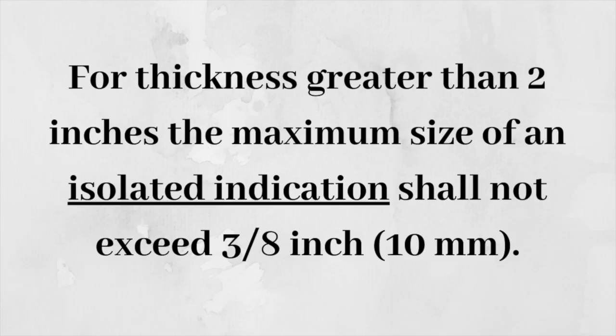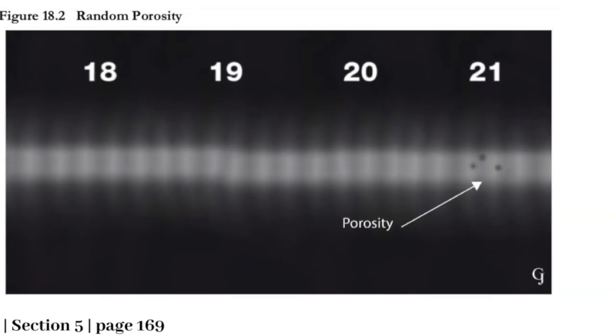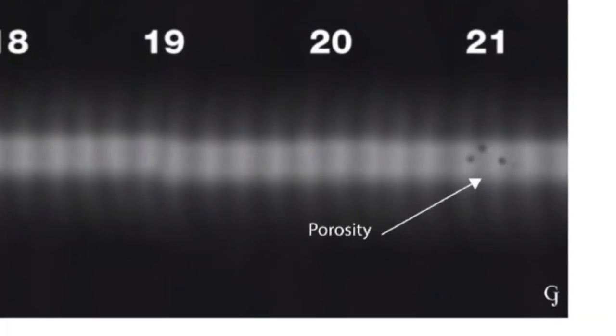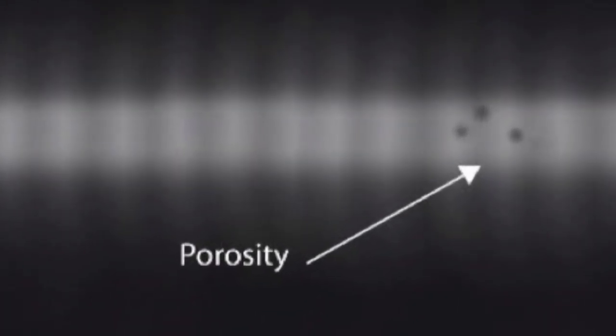For thickness greater than 2 inches, the maximum size of an isolated indication shall not exceed 3/8 inch or 10 millimeters. Refer to the relevant codes for specific details.